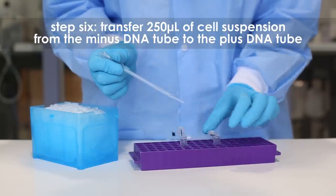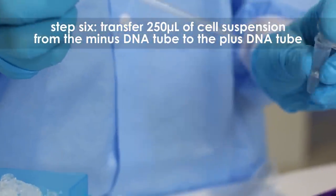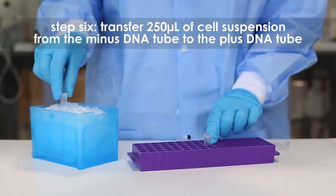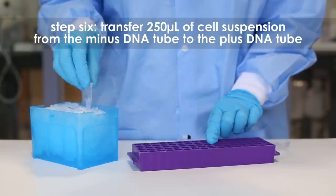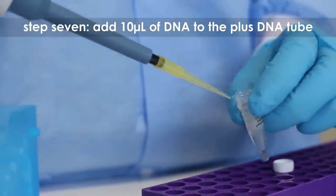Step six: transfer 250 microliters of the cell suspension from the minus DNA tube to the tube labeled plus DNA. Place the tubes on ice.